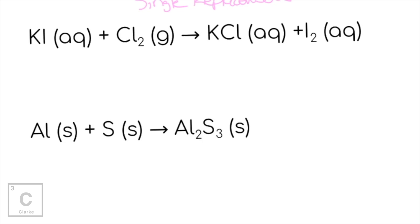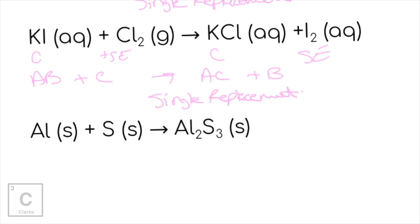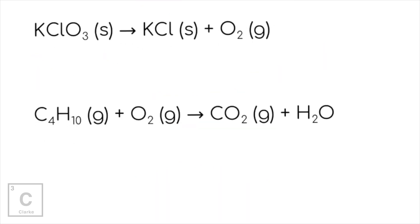Next: potassium iodide (KI) is a compound, and chlorine is a single element, yielding potassium chloride (a compound) and iodine — even though iodine is diatomic like chlorine, it's still a single element. Compound plus single element, AB + C → AC + B. Chlorine kicked iodine out — one move, single replacement. Another example: single element plus single element making one compound. We made something — that's synthesis or combination. Next: we have a big compound breaking down into a smaller compound and an element. One reactant means decomposition — we break it into smaller pieces.